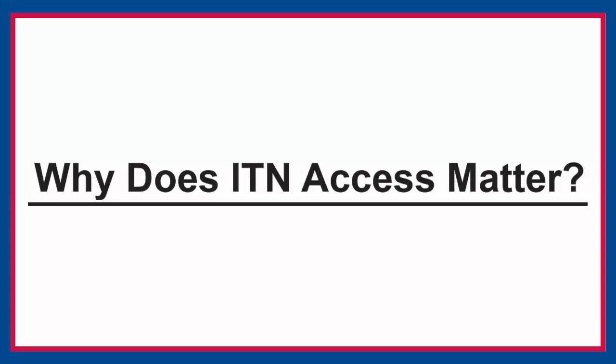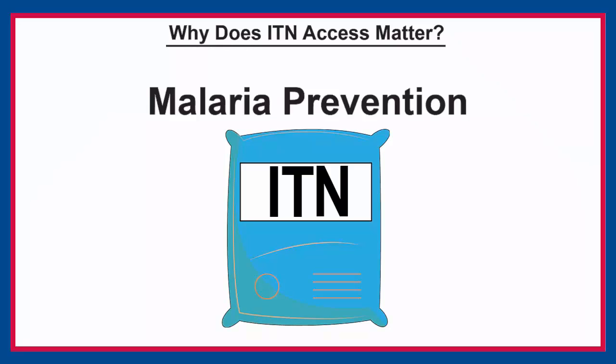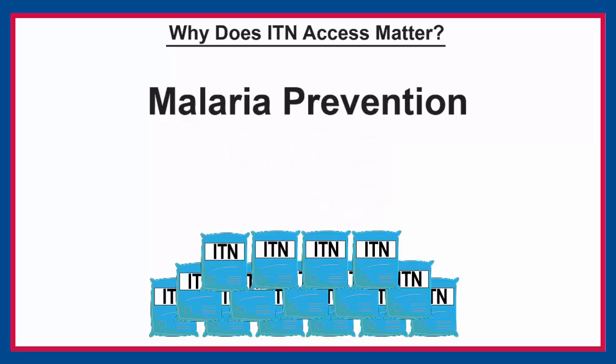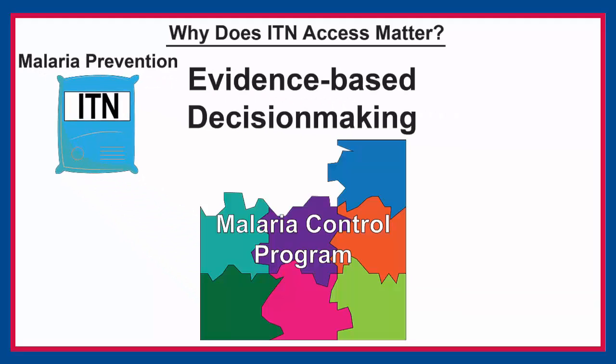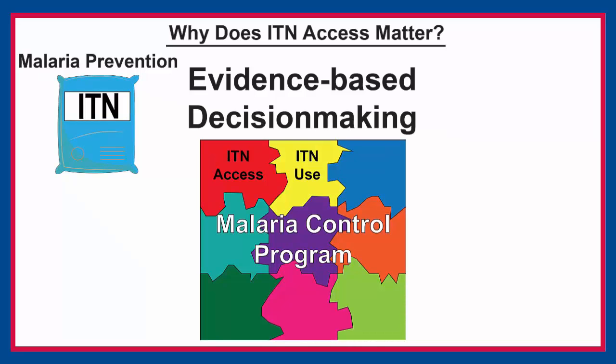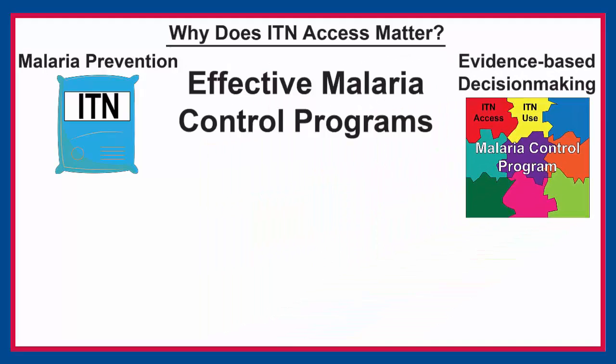So why does ITN access matter? Use of ITNs is one of the most effective measures for preventing malaria. In the past decade, country governments have distributed millions of mosquito nets. However, just because a household has an ITN, it does not mean that household members are using the net. Data on ITN access coupled with data on ITN use can provide a clearer picture of what exactly is happening in a country. This information is very useful for malaria prevention programs.